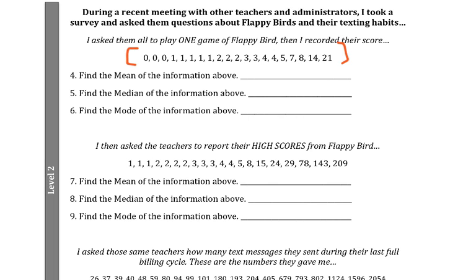I'm really hoping you double-check that, because it's easy to make a mistake. We need to count the numbers — we got 80 when we added them all together. And then we're going to divide by 1, 2, 3, 4, 5, 6, 7, 8, 9, 10, 11, 12, 13, 14, 15, 16, 17, 18, 19, 20. So 80 divided by 20 equals 4. The mean of that data is 4.